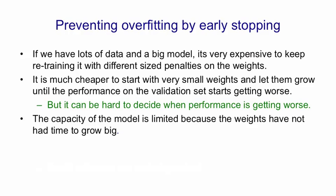Now, the performance on the validation set may fluctuate particularly if you're measuring an error rate rather than a squared error or a cross-entropy error and so it's hard to decide when to stop. So what you typically do is keep going until you're sure things are getting worse and then go back to the point at which things were best.